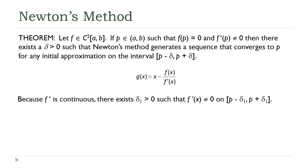And we do know that it's not equal to zero. Because f' is continuous, there exists a delta one. That's not my final delta, but there exists another delta such that the derivative is not equal to zero on that interval from p - δ₁ up to p + δ₁. That's just the definition of continuity.